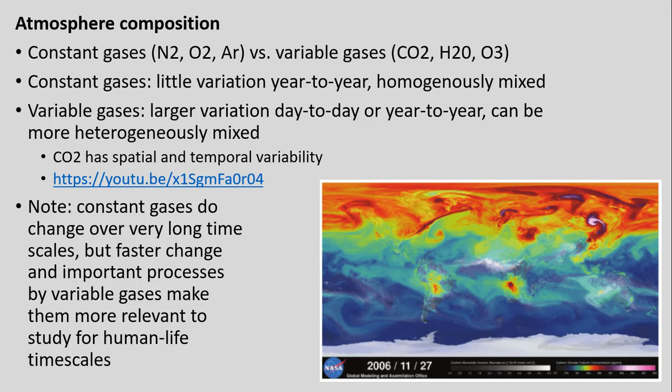These gases can be broken into two categories: constant gases versus variable gases. Constant gases — nitrogen, oxygen, argon — make up the majority of the atmosphere, with little variation year to year. They're relatively homogeneously mixed. They may change over very, very long timescales — thousands, hundreds of thousands, or millions of years — and the composition we have at present day has remained relatively stable.